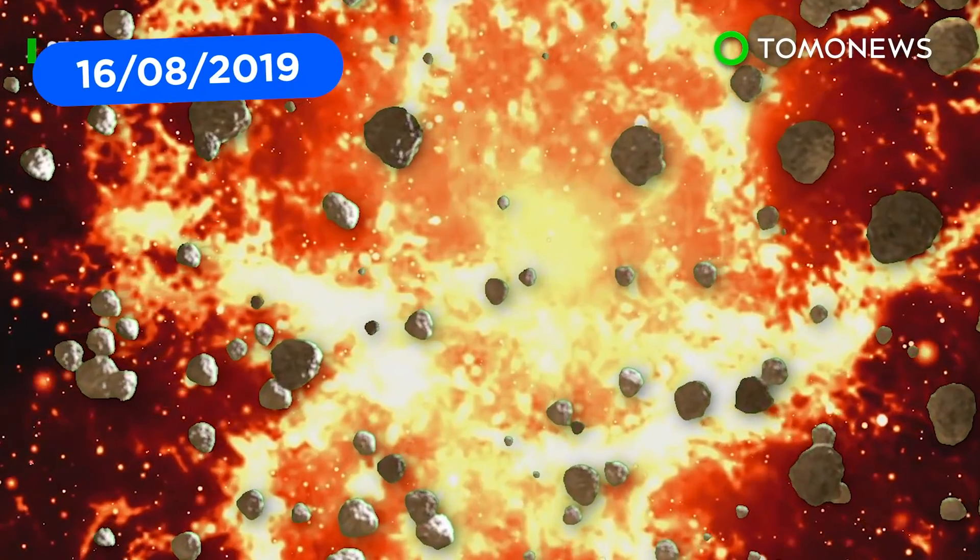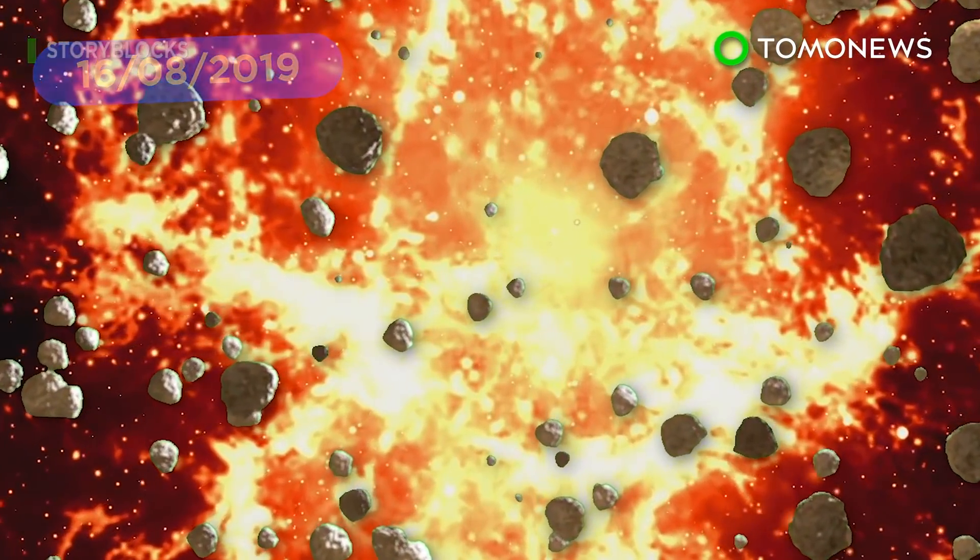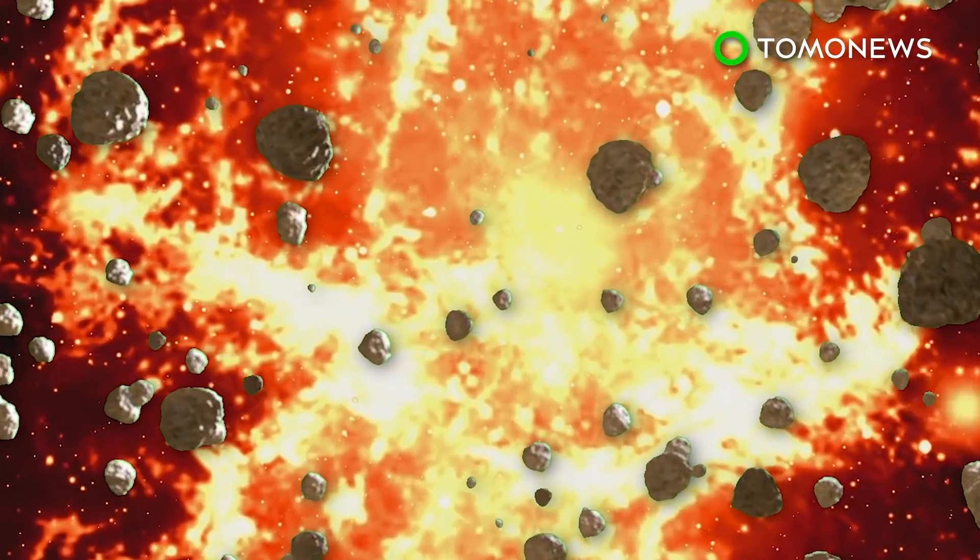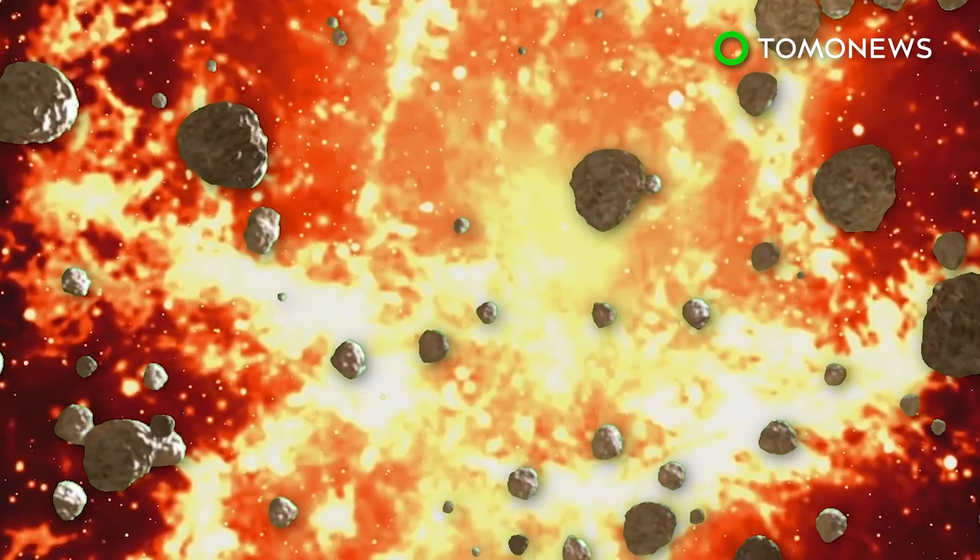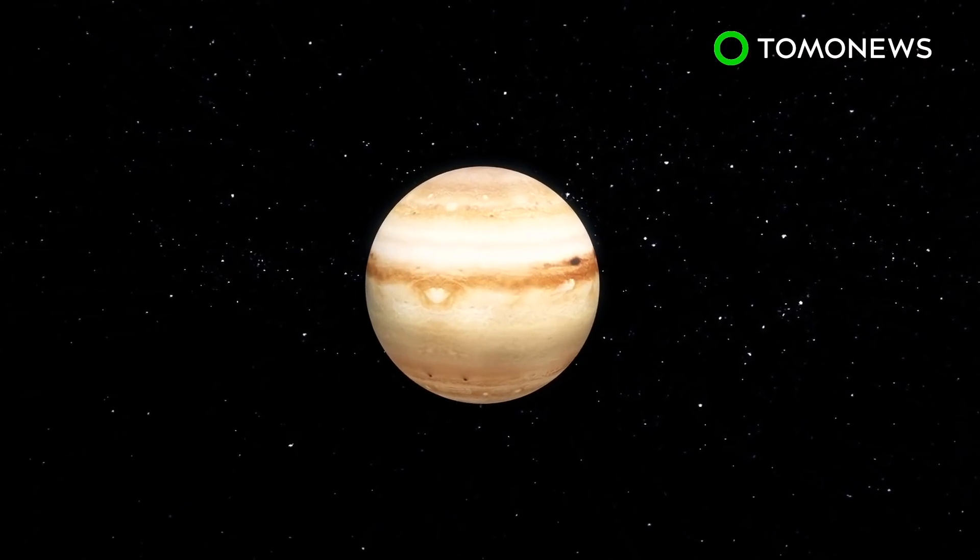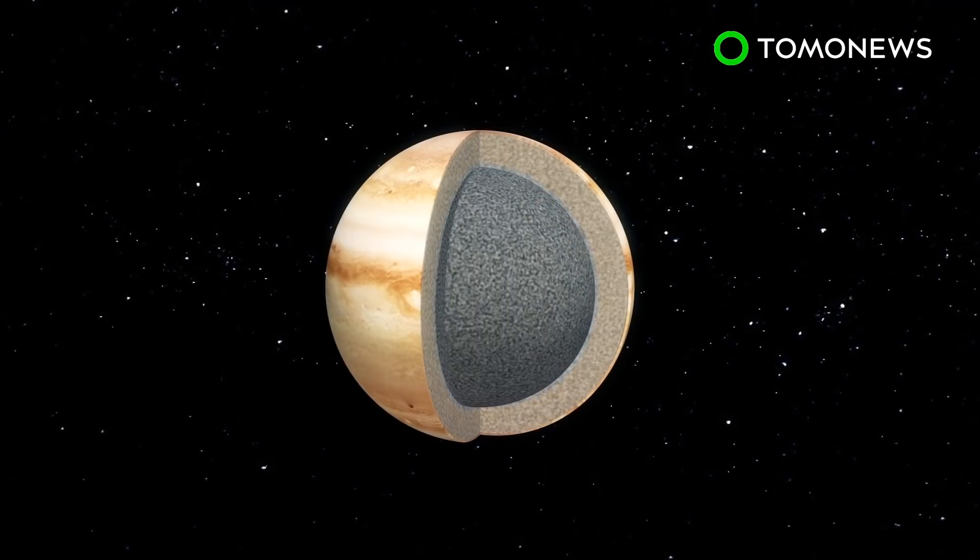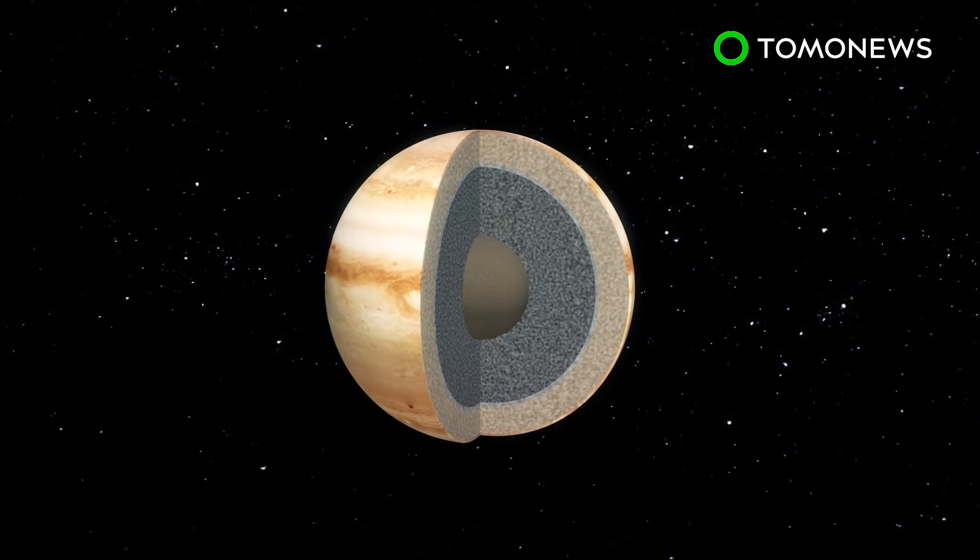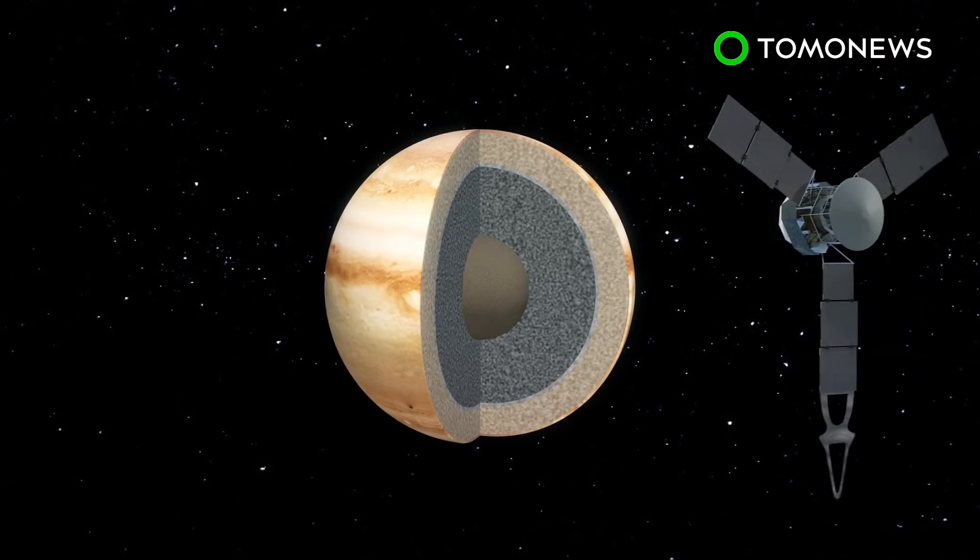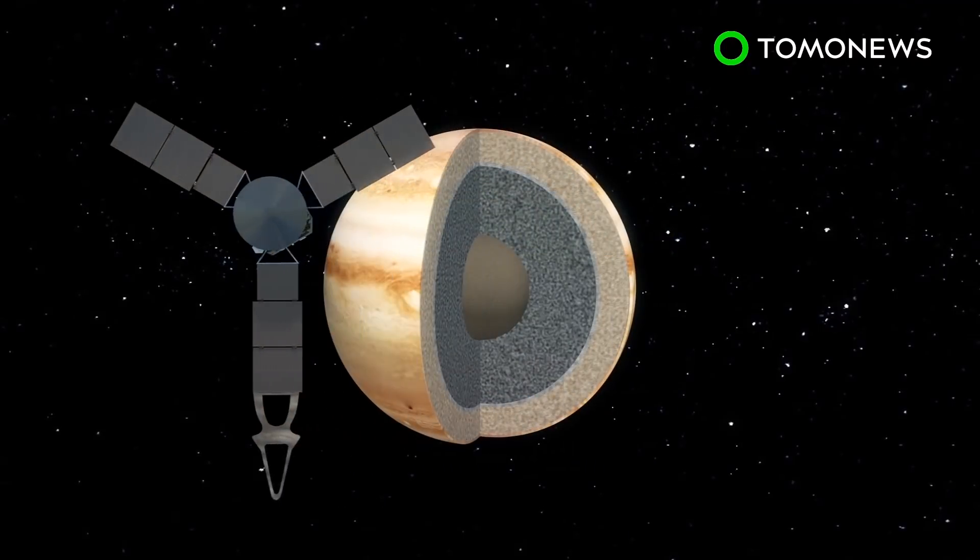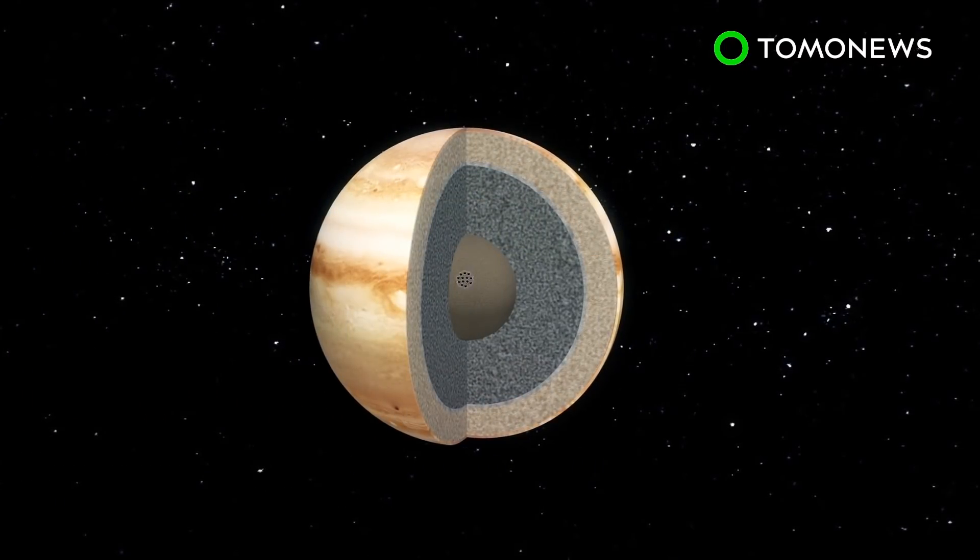A cosmic collision between Jupiter and a protoplanet billions of years ago could explain the unexpected readings from NASA's Juno space probe. According to a press release by Rice University, data from NASA's Juno space probe reported gravitational readings that suggest Jupiter's core is less dense and more extended than expected. Rice astronomer Andrea Isela said the readings are puzzling and that something happened that may have stirred up the core.